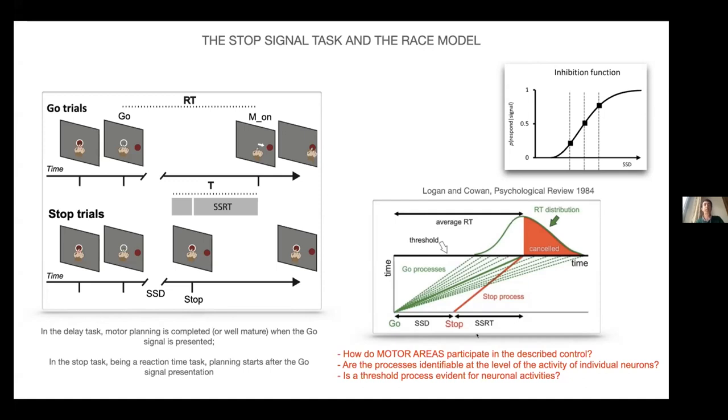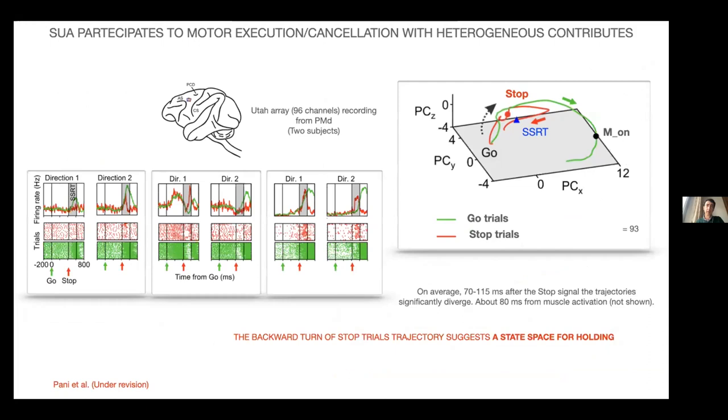I will present data at different spatial scales, starting from single unit activity. Here what you see on the left are some examples of neurons recorded in the dorsal premotor cortex of two animals while performing in the stop signal task. For simplicity I will often present data from only one animal and one session. Data are from Utah array, therefore chronically implanted, and one of the two movement directions. However, the results are consistent across the subjects and recording sessions.